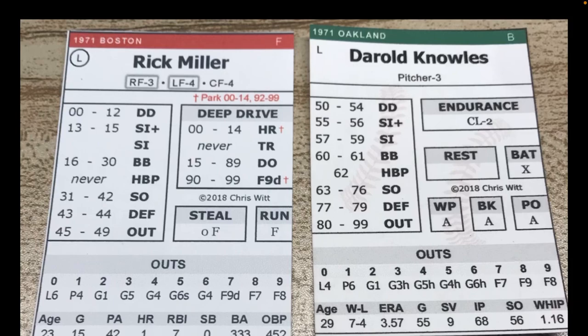But he does get the advantage. When it's a lefty, it's this simple: let's say a 16 lands on Rick Miller's card. If Darryl Knowles has the advantage, you see that 16 on Rick Miller's card — you're allowed to add 50 to it and make it a 66. On Darryl Knowles' card it goes from a base on balls to a strikeout. 63 to 76 on Darryl Knowles' card is a strikeout, and that's a huge advantage for the pitcher.